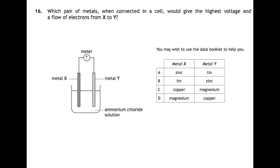Question sixteen: which pair of metals when connected in a cell would give the highest voltage and a flow of electrons from X to Y? You may wish to use your data book to help you. You need to use page 10 of your data book and you're looking for the metals with the biggest difference. And we're trying to flow from X to Y, so the more reactive metal is X and the less reactive metal is Y. Zinc and tin: zinc is more reactive than tin. Tin and zinc would be the wrong way round. Copper and magnesium is the wrong way round. And magnesium and copper is the correct way round. So we've got two options. And magnesium and copper have a bigger difference on page 10, so that would give you the biggest voltage.